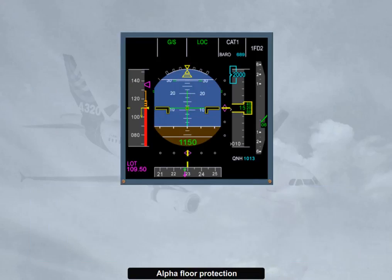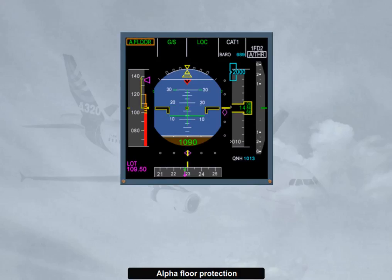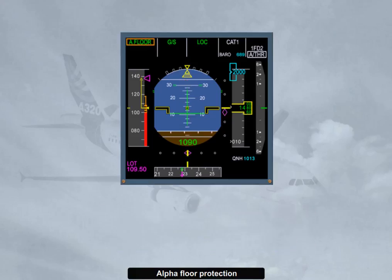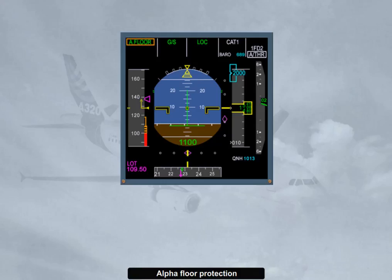If the airspeed continues to drop below the low energy warning and the angle of attack increases above a given threshold, the alpha floor function of the autothrust is triggered. This also inhibits the low energy warning. The autothrust commands full thrust — that is, TOGA thrust. The angle of attack threshold which triggers the alpha floor protection is processed by the FAC as a function of aircraft parameters such as configuration and deceleration rate. When alpha floor is triggered, autothrust is turned on if it was previously off, indicated by a white ATHR on the FMA.